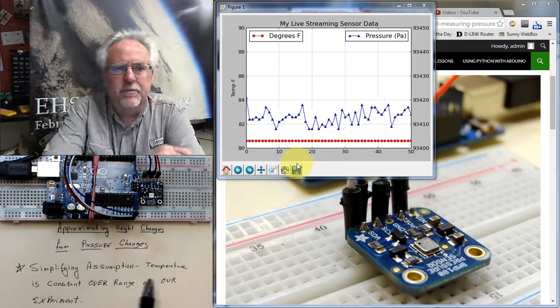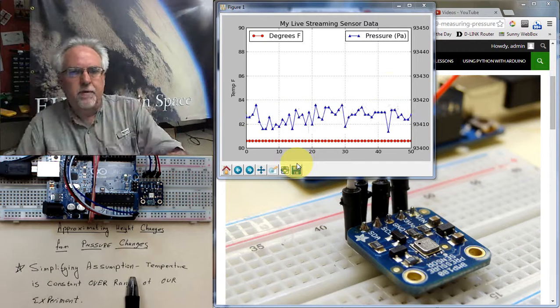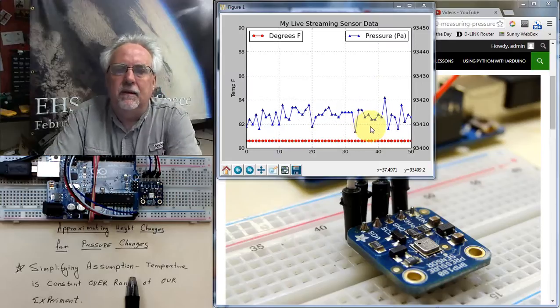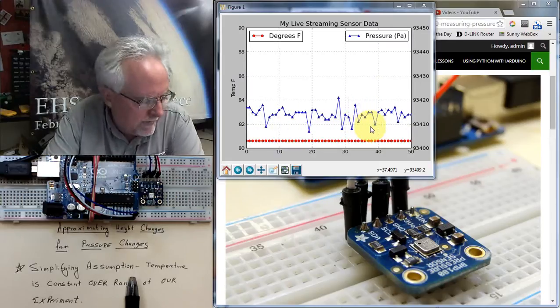It's taking the measurement, it's streaming that data over the serial port. Python is reading it from the serial port and then making a live graph. And this is where we ended up in lesson number 11.